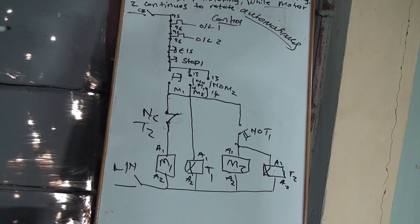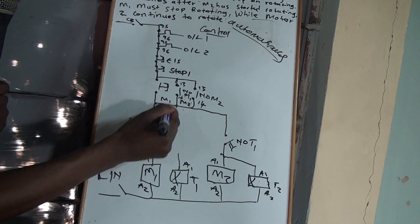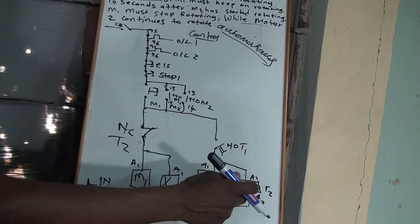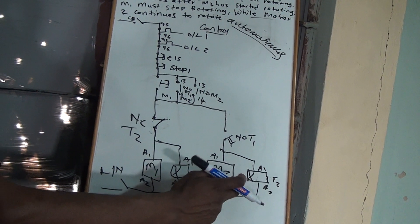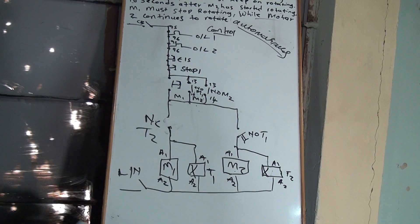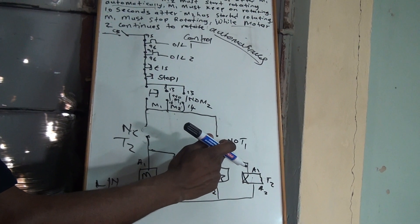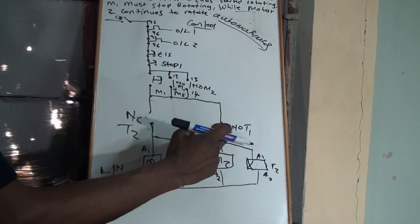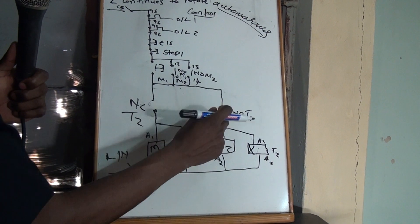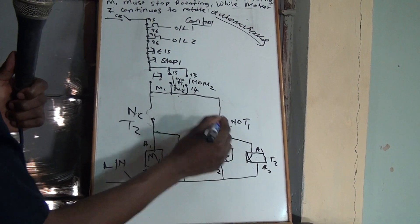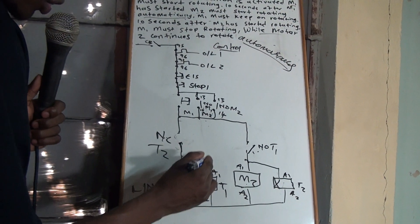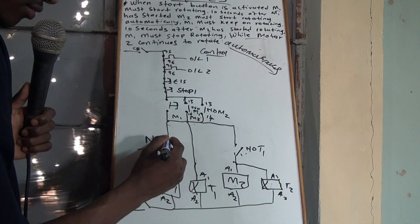So this is how your circuit should look. Remember, we don't connect Timer 2 here on the Motor 1 branch. I know many people love to connect it there, but if you connect it there, remember when Motor 1 stops rotating after 10 seconds, it's going to be an open circuit there and Timer 2 de-energizes. When it de-energizes, the normally closed contact becomes a normally open, and Motor 2 will stop. But we say Motor 2 must continue to run. So to make Motor 2 continue to run, we connect Timer 2 here on the Motor 2 branch, not on the Motor 1 branch.